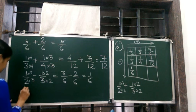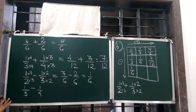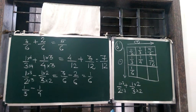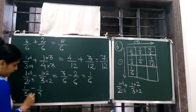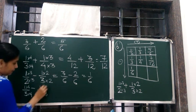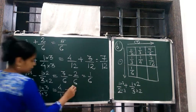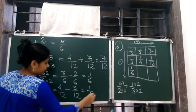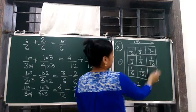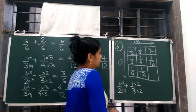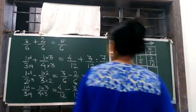Then 1 by 3 minus 1 by 4. Again denominators are not same, so we are going to interchange and multiply. That means 3 multiplies this side and 4 multiplies this side. So 4 ones are 4 by 12 minus 3 ones are 3 by 12, so it is 1 by 12. Either we add this way or we subtract this way — if we go this way we subtract and if we go this way we add.